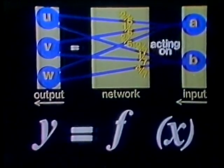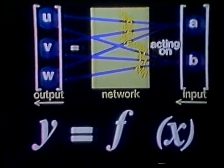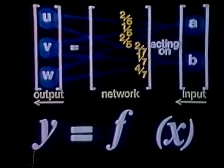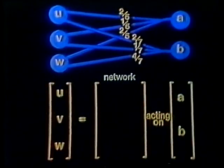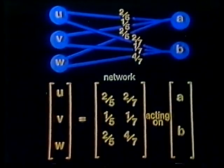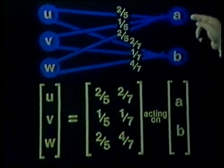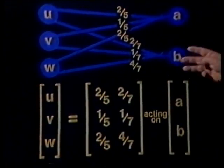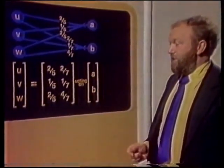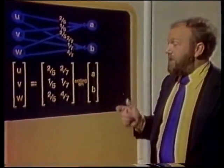We represent the three components with three matrices. Our output matrix contains the quantities U, V, and W, and our input matrix the quantities A and B. The matrix for our network will contain the six proportions, not just as they are, but rearranged in a rectangular pattern — in two columns. The first column contains the proportions for the first input A, the proportions into which A gets divided. And the second column gives the proportions into which the second input B gets divided. Why do we choose to arrange the proportions in this particular pattern, the columns corresponding to the inputs? Well, partly it's convention, but it is a sensible pattern.